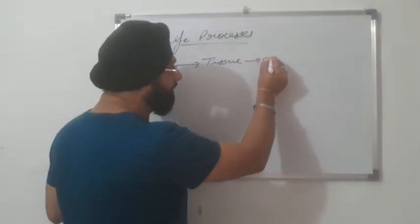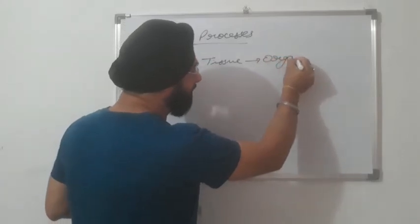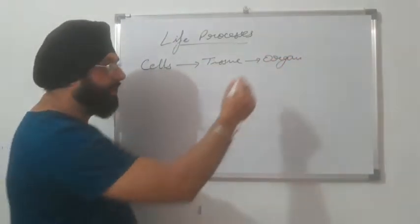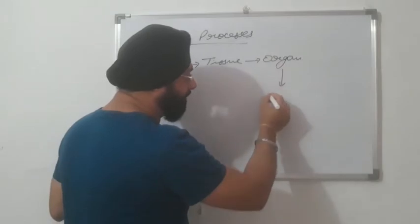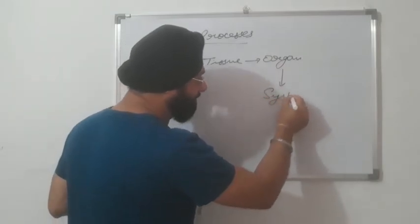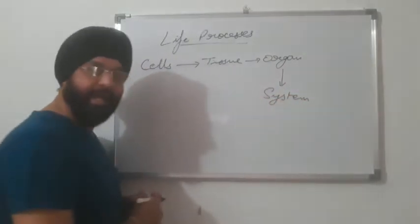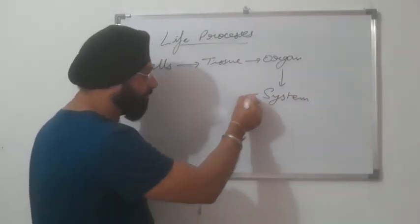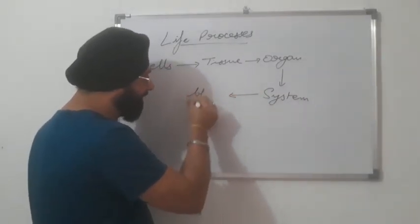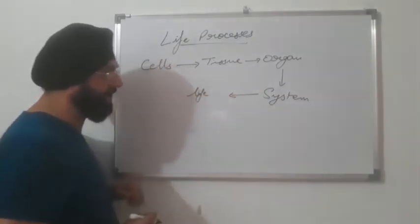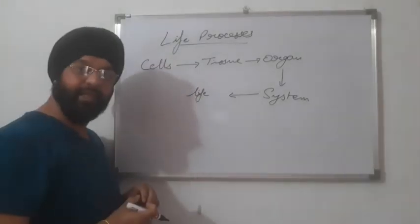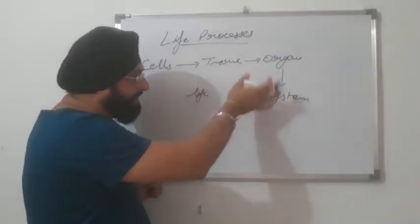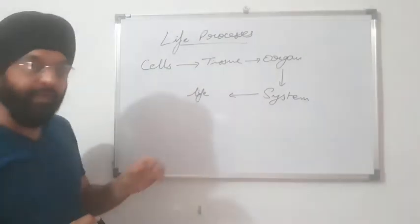The tissues join together to form organs. Organs join together to form organ systems and different systems join together and make life possible, that is an organism. So this was the basic structure.